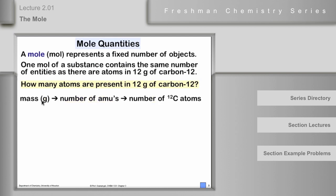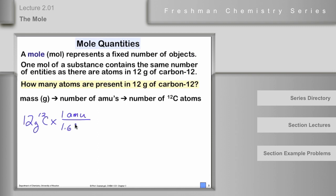What we're going to do is start with 12 grams, convert that to the number of atomic mass units, and then convert that to the number of carbon atoms. So 12 grams of carbon-12 — we want to go to the number of AMUs, using the conversion constant: 1 AMU is equivalent to 1.66 × 10⁻²⁴ grams. The grams will cancel, and we'll have numbers in units of AMUs.